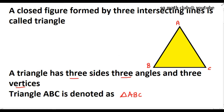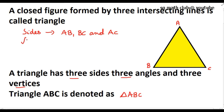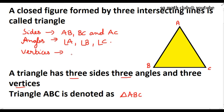A triangle has three sides. The three sides of this triangle are AB, BC, and AC. The three angles of this triangle I can denote as angle A, angle B, and angle C. And the triangle has three vertices, which I can denote as A, B, and C.